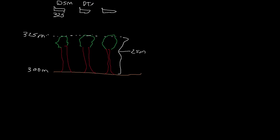What elevation data is the DTM going to return? The digital terrain model is the terrain of the earth minus the surface features — we're excluding surface features. So it's going to see and grab 300 meters. So the digital surface model takes 325, and the digital terrain model returns 300.